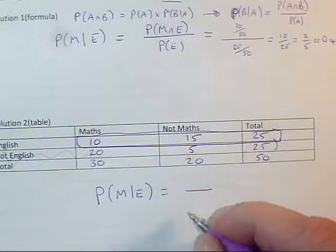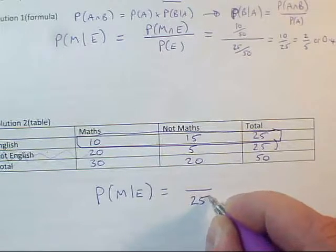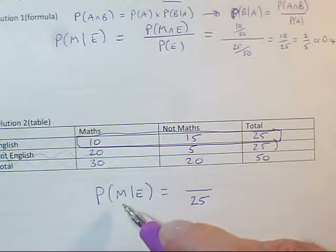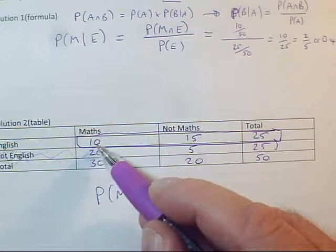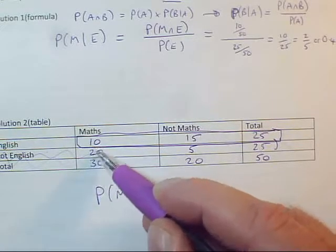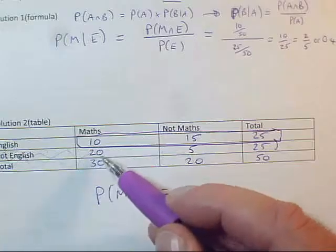This time, it could only be one of 25 students, so I need 25 on the bottom. And I want them to study maths. So it could be one of these 10. It can't be any of these ones down here, because they don't study English. I'm ignoring them from the beginning.